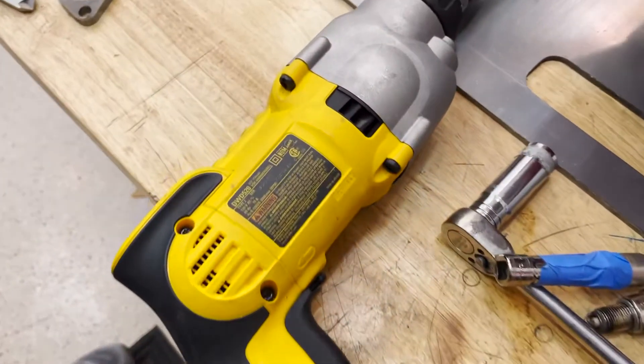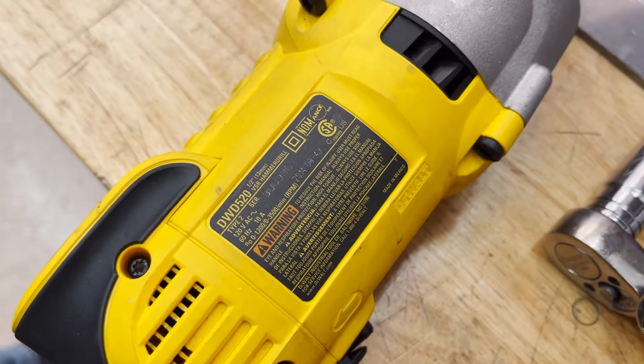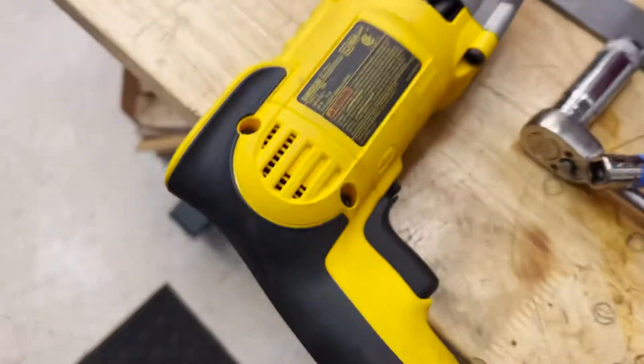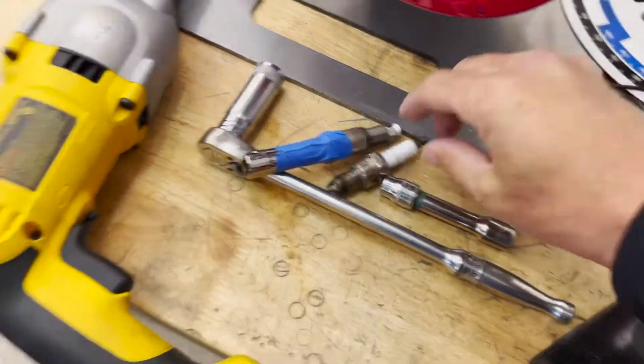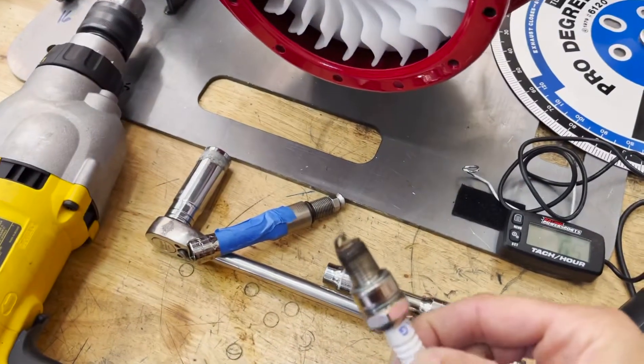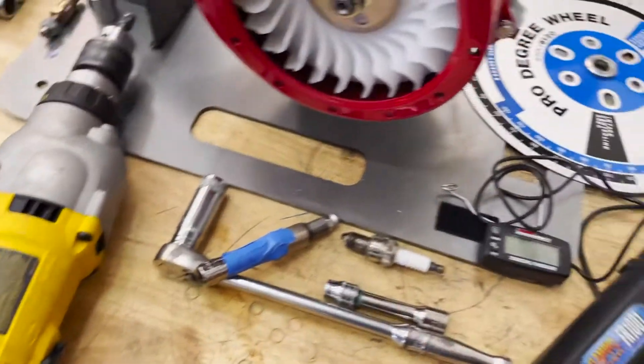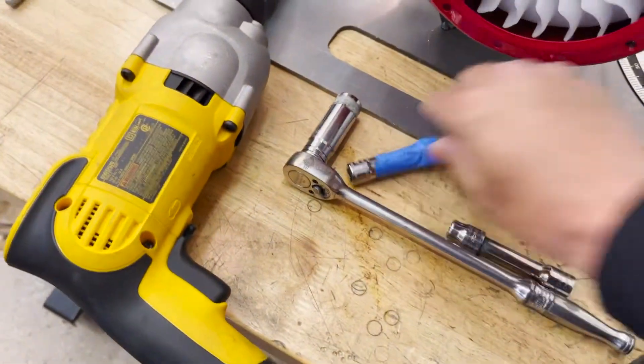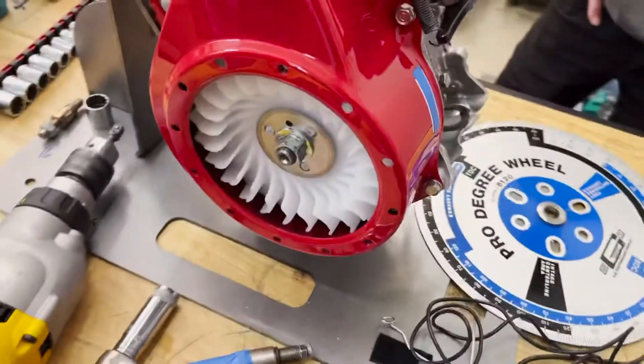And then we have our DeWalt drill. This is the drill that USAC calls out in their spec manual. You need a piston stop and a standard spark plug. Piston stop. Let's get to town.